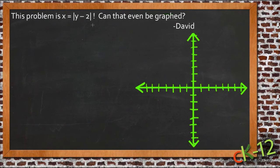Let's take a look at David's equation and see if we can figure out why it seems to be a little bit different here. His equation says x equals the absolute value of y minus 2. So the big difference here is that instead of having y on the outside and then x in the absolute value, we've got it the other way around. So let's see what that does differently to our graph here.